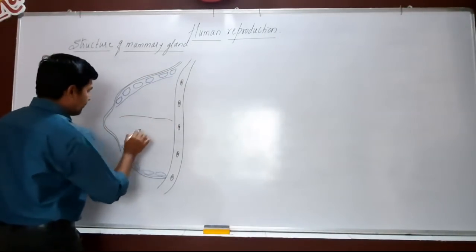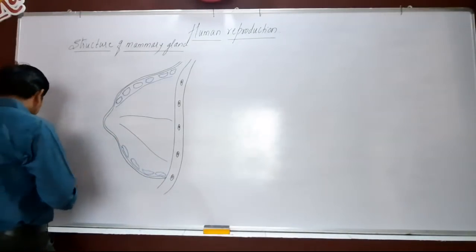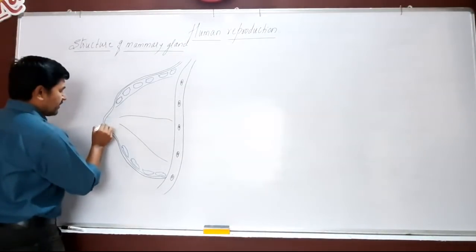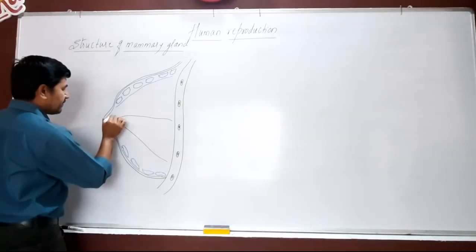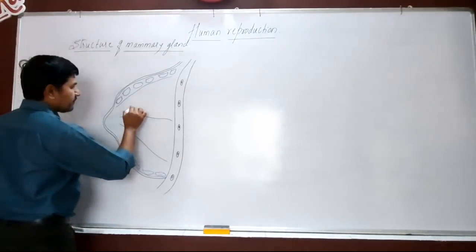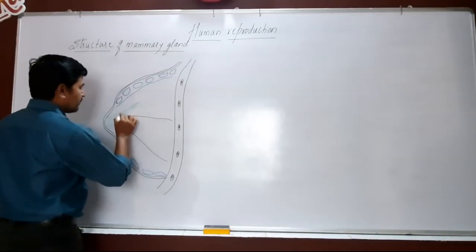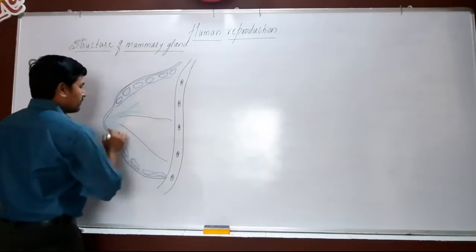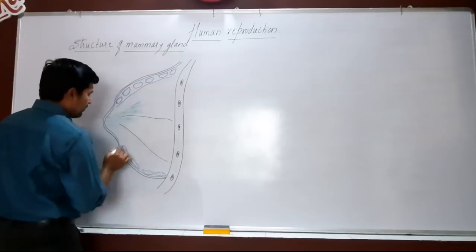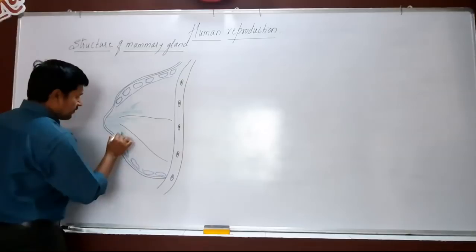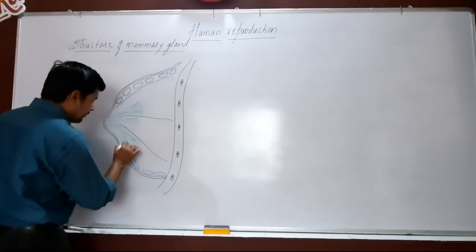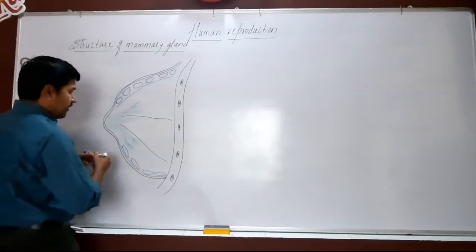These mammary glands also have different lobules. Certain ducts are also located here — we observe the ducts, which get branched also. We also observe the terminal parts here, and there are certain structures at those terminal parts.